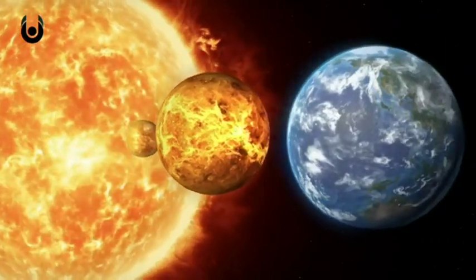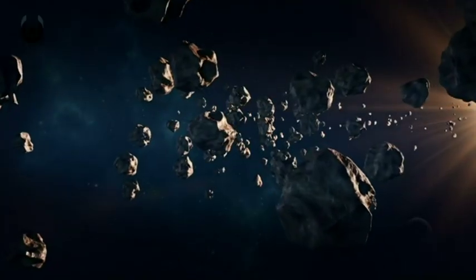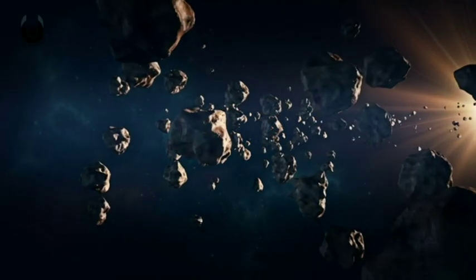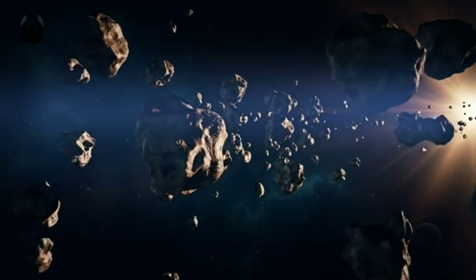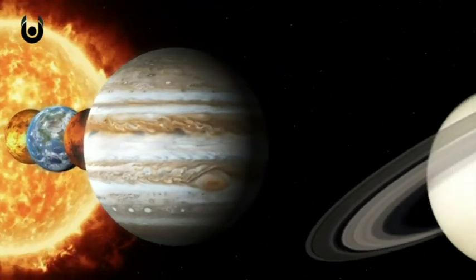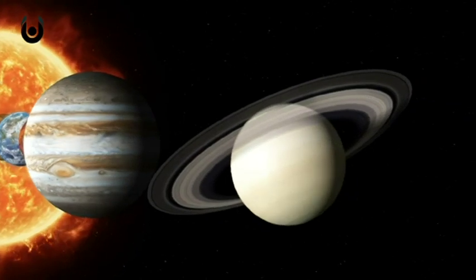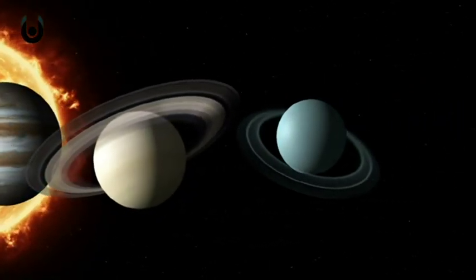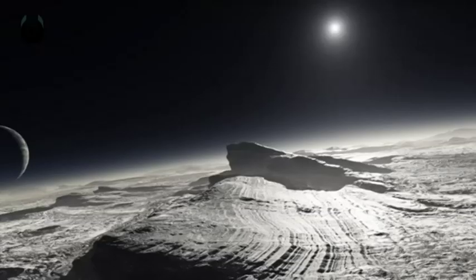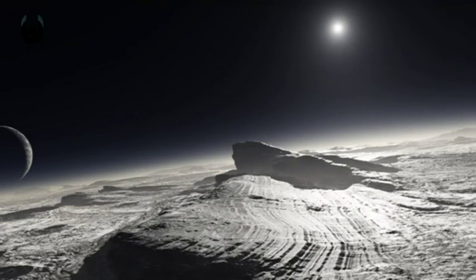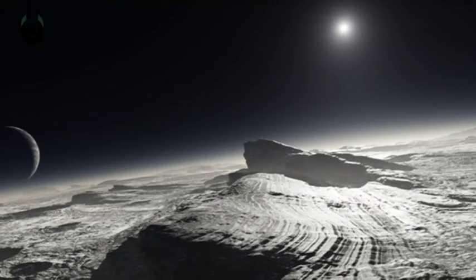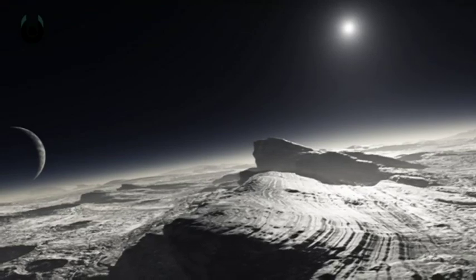So when we look at our solar system, we have these rocky planets near our sun. And we found three rocky Earth-like planets, one to one and a half times the mass of our Earth, really close to a neighboring star, so close that they orbit in three to 13 days. So every year is only 13 days long.